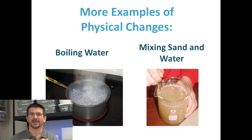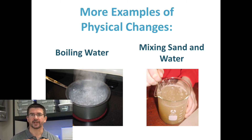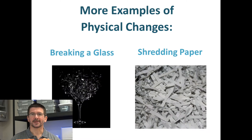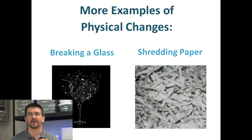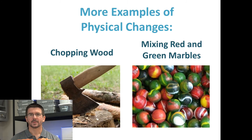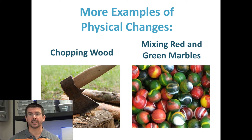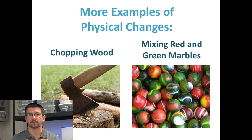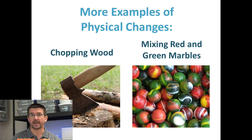Mixing sand and water — even though they mix together, you still have your sand and your water, and you could separate them back out. Breaking a glass or shredding paper — we're taking something and breaking it into smaller pieces, but you still have pieces of glass and pieces of paper, so these are still physical changes. Chopping wood is breaking something into smaller pieces. Mixing different colored marbles — even though they're mixed together, we've still got red marbles and green marbles. Similarly, if we mix salt and sugar, those are two different chemicals; we could still identify a grain of salt from a grain of sugar by tasting or examining them closely.